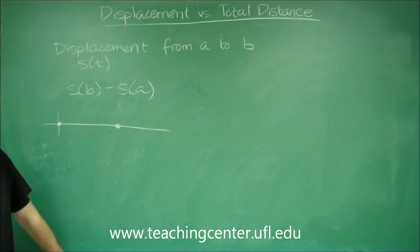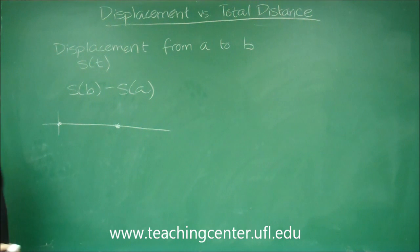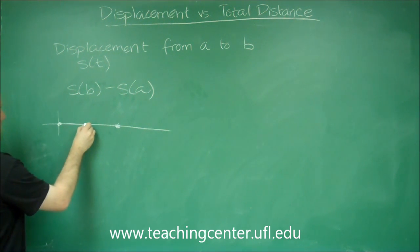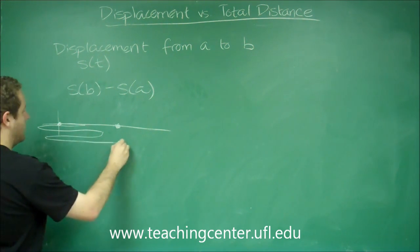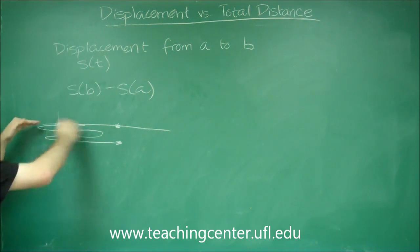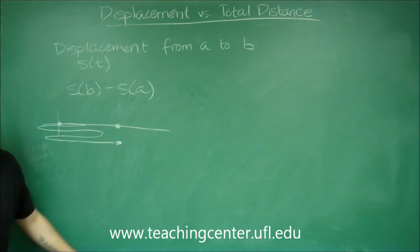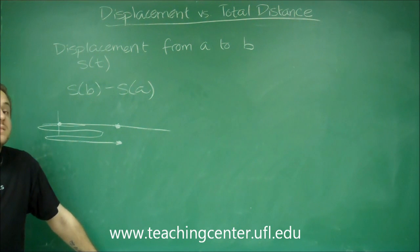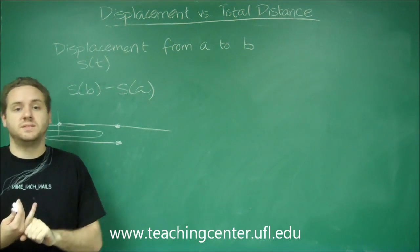Total distance is a slightly different concept, because just because you ended up here doesn't mean that's the entire distance you traveled. For example, what if you went like this, and then came back, and then went this way, and then came back, and then went over here, and ended up here. You still ended up this far away from your starting point, but the total distance you traveled is certainly not just this distance. So total distance and displacement don't have to be the same thing.